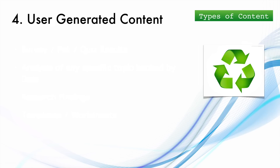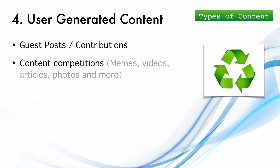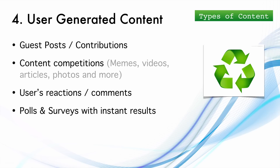The fourth type is user generated content. This includes guest posts or contributions on your blog, content competitions where users submit memes, videos, articles, or photos, and user reactions or comments inside blog posts. Forums and groups are a great source of user generated content — many forum owners make significant ad revenue without creating any content themselves. Wikis, including Wikipedia, are another prime example where multiple experts contribute and edit articles.